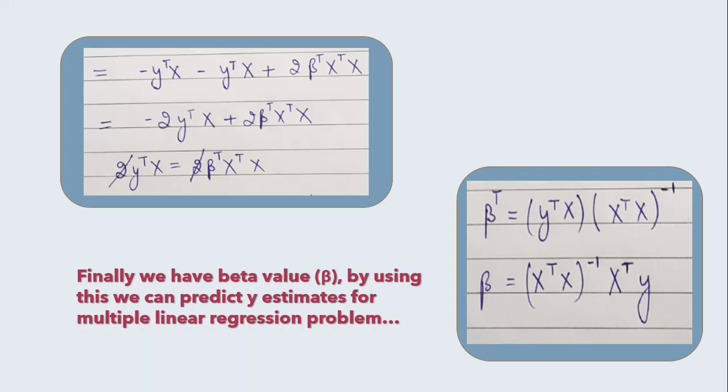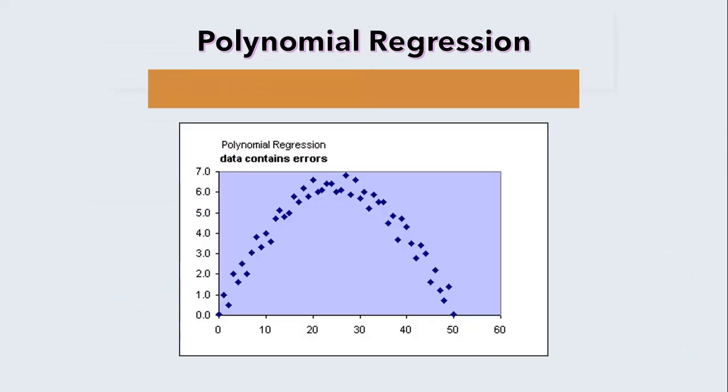Now we can predict the value of Y by using estimates of this coefficient. That's all I have for multiple linear regression. If you can see the screen, we have a Cartesian plane where data points are scattered in a way that looks too complex to fit a straight line. And if somehow we manage to fit the line, then that will be under fitting condition as it will not cover that much data points.